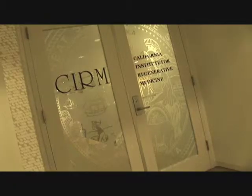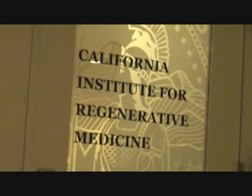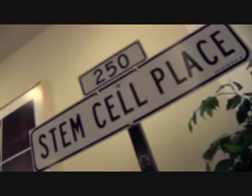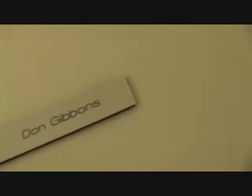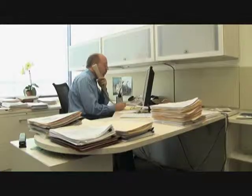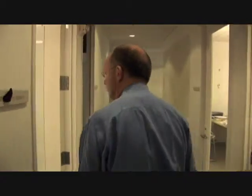CIRM is the state stem cell agency. It was created by Prop 71 back in November of 2004, and it's in essence a funding agency. We fund research up and down the state, but we're actually a little bit more than that in that we have a science team here that really analyzes the field and looks for gaps where the field isn't moving as fast as it could, and we very specifically target those gaps and fund research to fill those gaps so we'll get to the therapies more quickly.